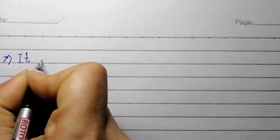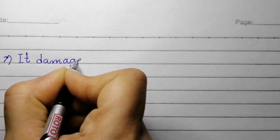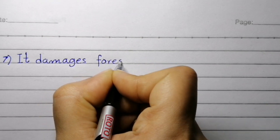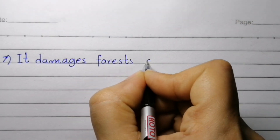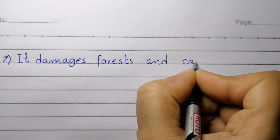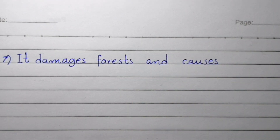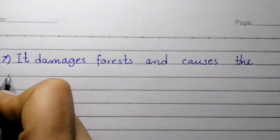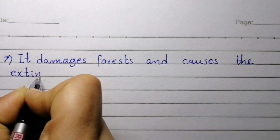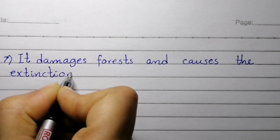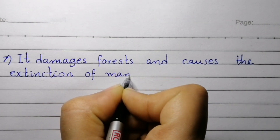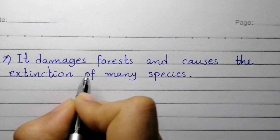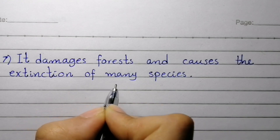Point number seven: acid rain damages forests and causes the extinction of many species.